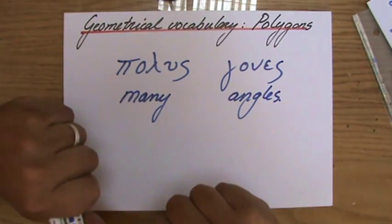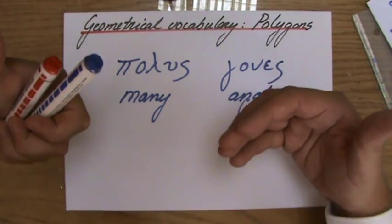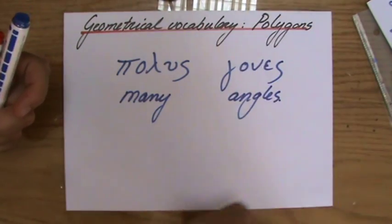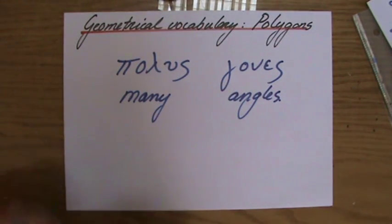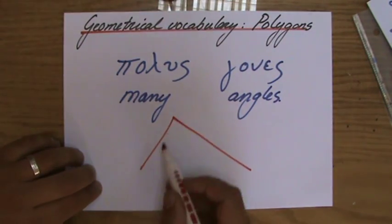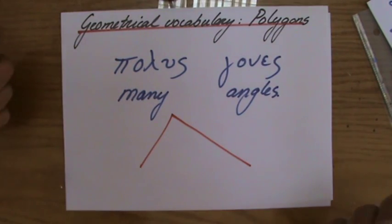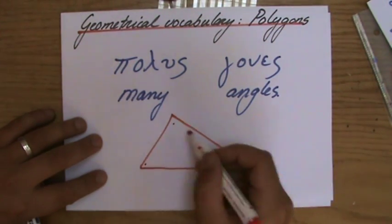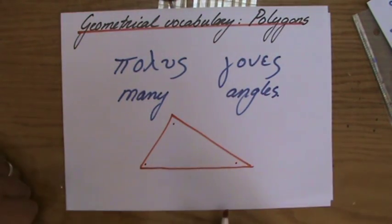So any flat figure with many angles, which is more than two. So three or more. So that is a polygon. And this, if I only have two lines, that's not a polygon, because it needs to be a complete figure. So it has at least three angles, a polygon.